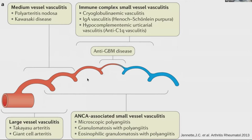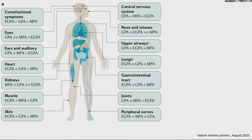If you think of strict small vessel vasculitis, those are likely cryo, HSP, or anti-C1Q vasculitis. We often classify ANCA vasculitis as GPA, MPA, or EGPA.